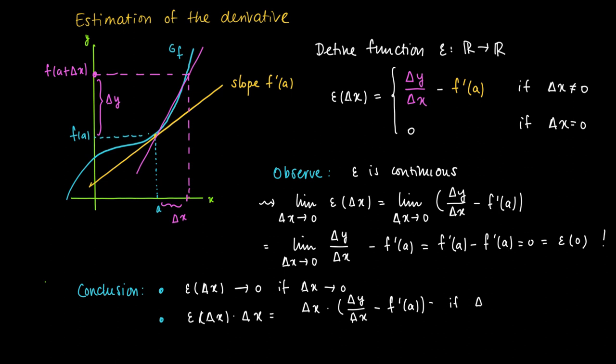And if Δx equals 0, then of course ε(Δx) times Δx equals 0. This should come as no surprise.